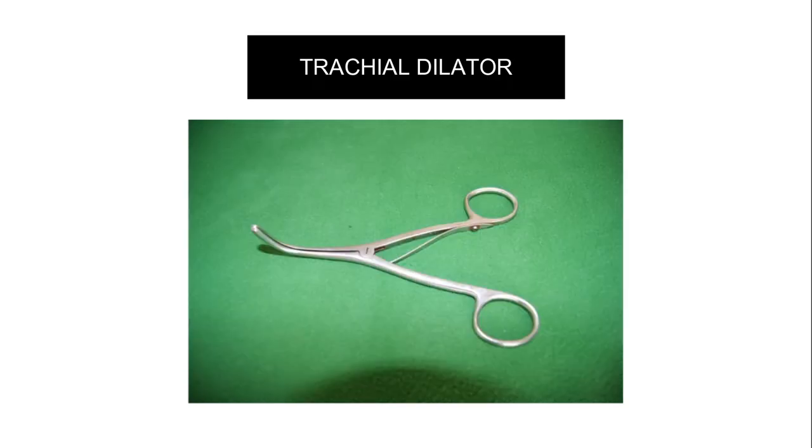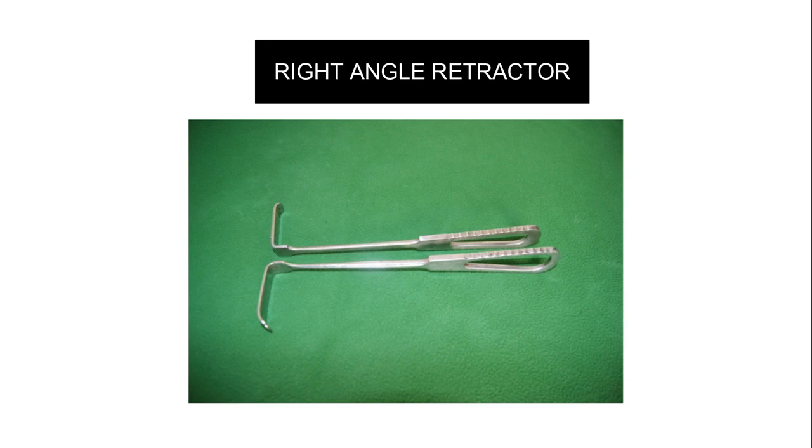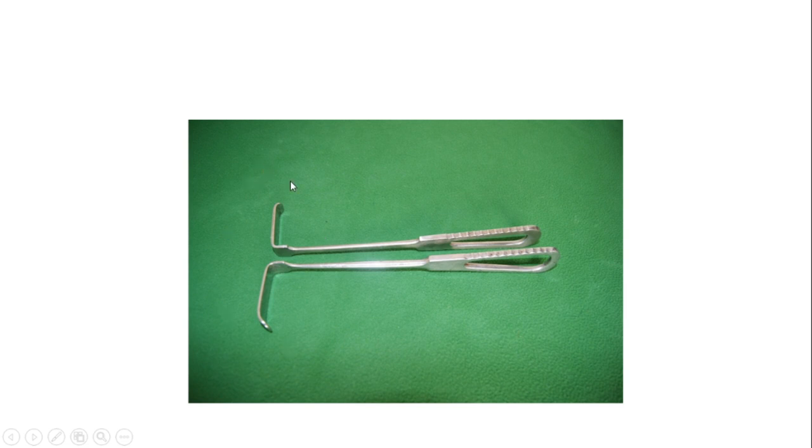This is the tracheal dilator. When you squeeze the handles together, the tips open outward. In tracheostomy, after making the incision, this instrument is used to dilate the tracheal opening. This is a very important instrument. This is the right-angle retractor — a soft tissue retractor.